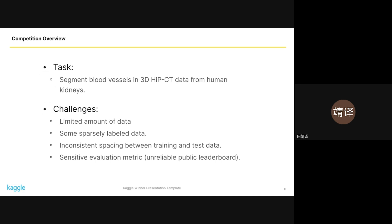The goal in this competition is to segment blood vessels in human kidneys. The challenges were multiple, including limited data availability, the presence of sparsely labeled data, inconsistency in the spacing between training and testing sets, and a sensitive evaluation metric that made the public leaderboard unreliable. This challenge required us to devise a robust solution.